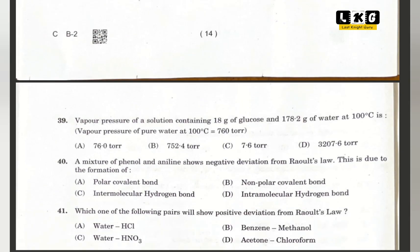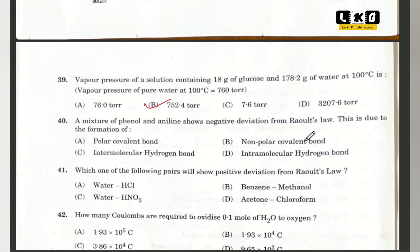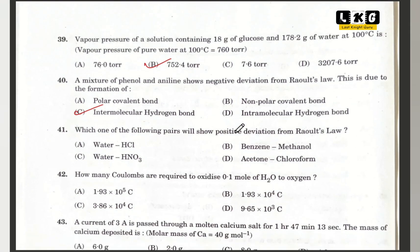Question number 39: the vapor pressure of a solution containing 18 grams of glucose — option B is correct, 752.4 torr. Question number 40: a mixture of phenol and aniline shows negative deviation from Raoult's law. This is from the solutions chapter and is due to formation of option C — intermolecular hydrogen bonds. Question number 41: which pair shows positive deviation from Raoult's law? Option B is correct — benzene and methanol.